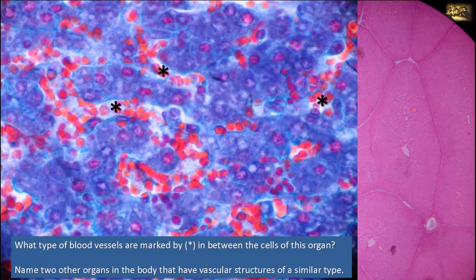What type of blood vessels are marked by the asterisk in between the cells of this organ? Name two other organs in the body that have vascular structures of a similar type.